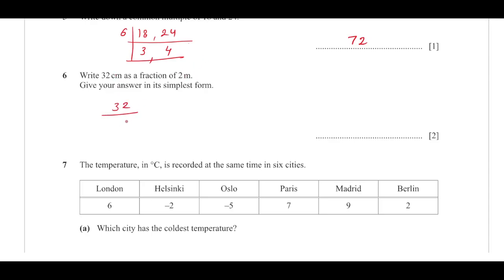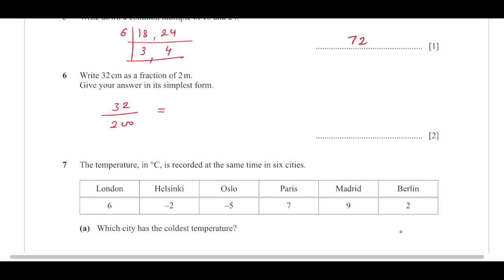We will divide 32 centimeters by 2 meters and keep the units the same, so 2 meters will be converted to centimeters, giving us 32 divided by 200. If I simplify, I get 4 divided by 25. So the answer is 4/25.